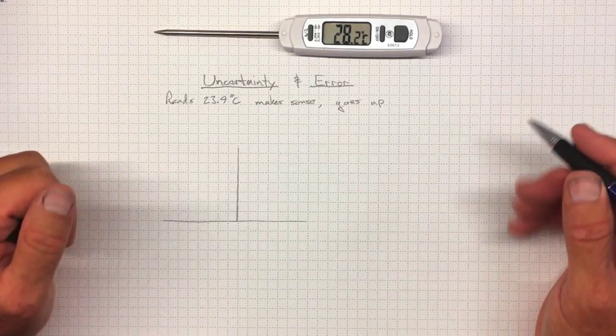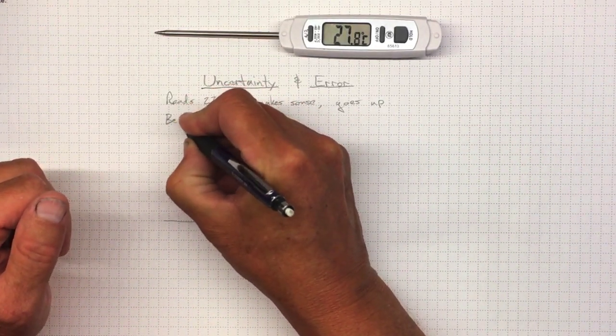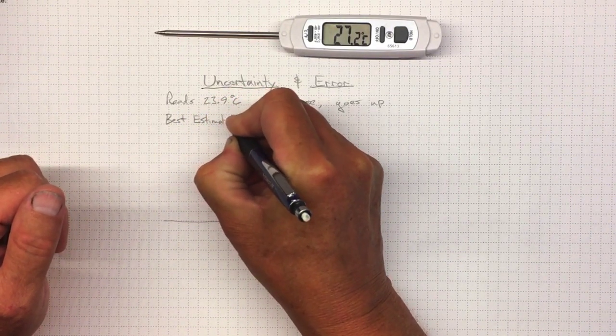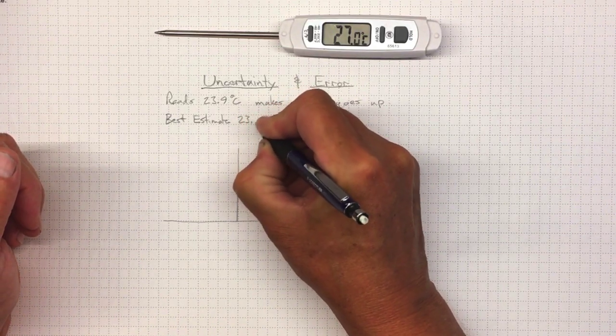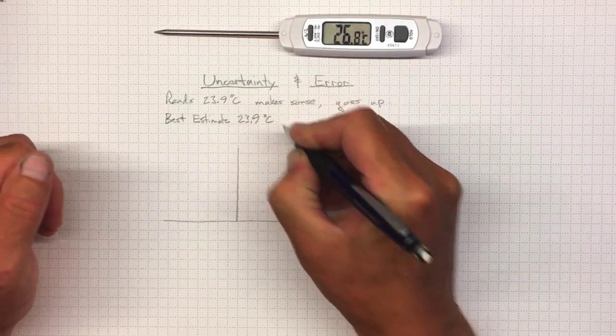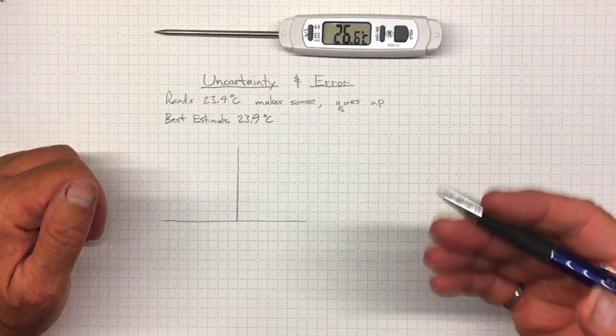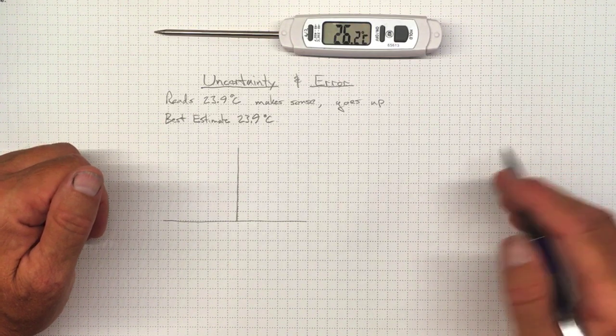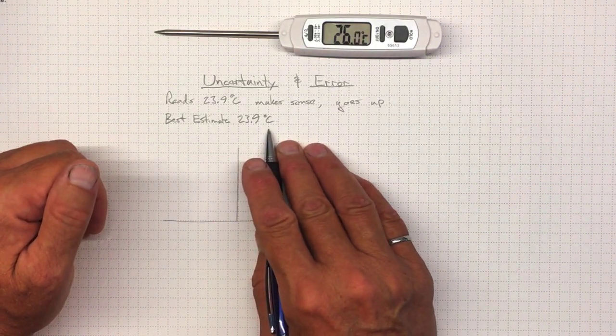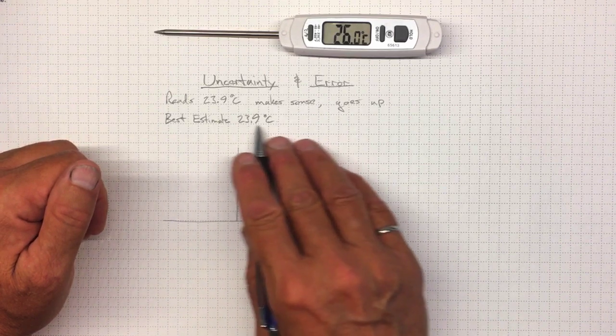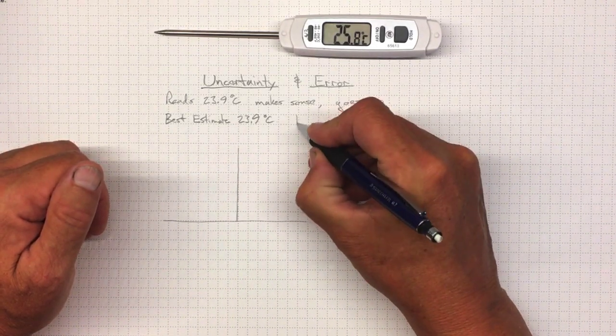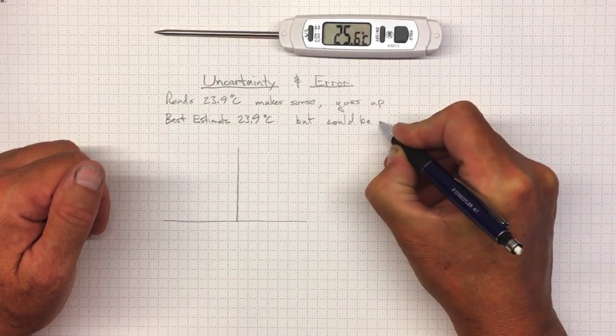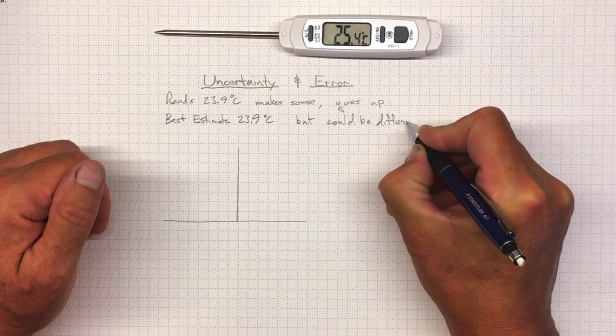So what's our best estimate of what the actual room temperature is here? If you said our best estimate is 23.9, then I'd say you're doing pretty well because that's the best information that we've got. It's consistent with the other information that we've got, and we haven't got any basis to make a different estimate than that. So we've got 23.9, but we know that it really could be different, the actual room temperature.